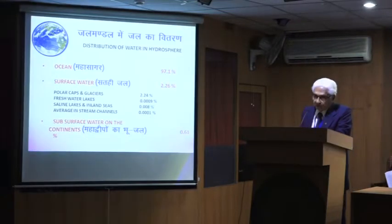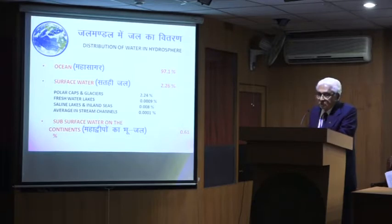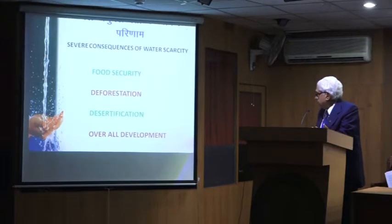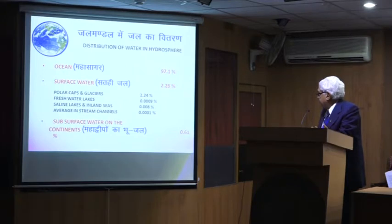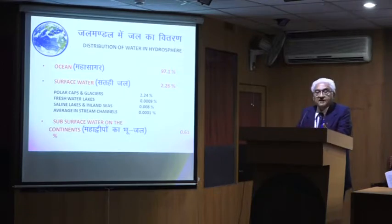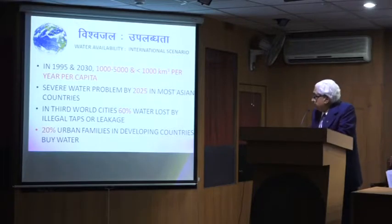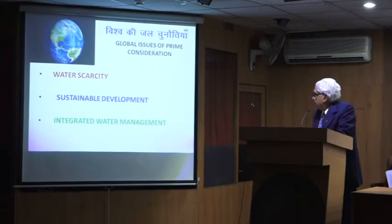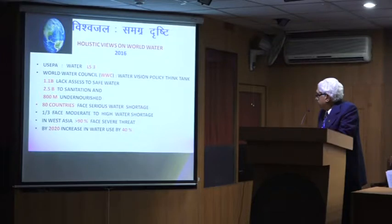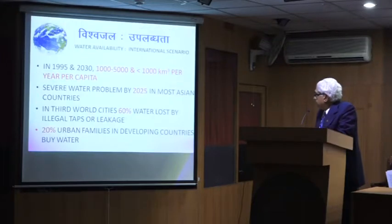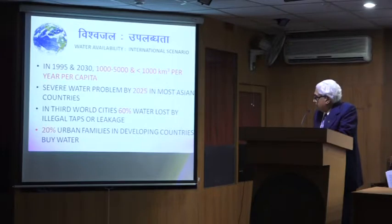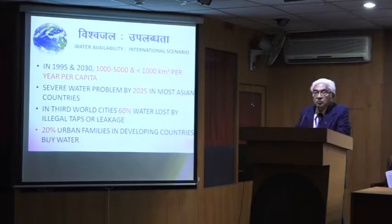If you look at water problems: in the entire universe we have 97% of water locked in the oceans. What we have is only 0.61% of water on which all flora, fauna, cattle, and the load of pollution rests. In 1995, we had 1,000 to 5,000 cubic meters per capita water, which will reduce by 2030. Severe water problems by 2025. In the third world, 60% of water will be lost, and 20% of urban families in developing countries are going to buy water.